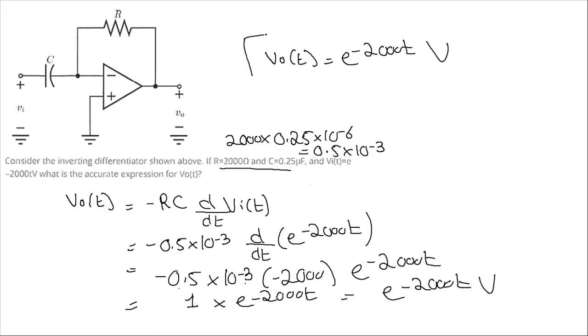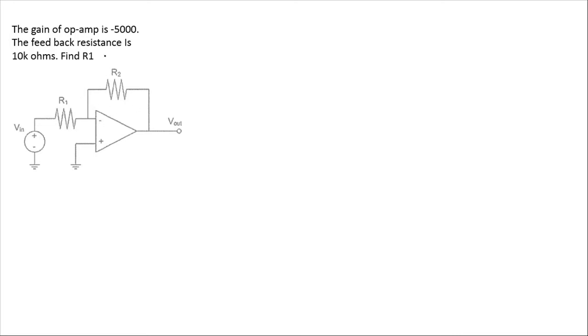In the next circuit we are given an inverting operational amplifier configuration. The gain of this operational amplifier is minus 5000. The feedback resistance R2 is 10k ohm, connected as a feedback resistor. We need to find R1, which is unknown.